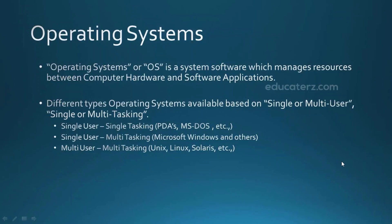So how would your operating system know to run all these things in parallel? How would your hardware know to perform these specific operations? It is the operating system which acts as an interface between your computer hardware and the resources, or we can say, the computer applications. The operating system manages the hardware resources with the computer applications and bridges the gap between your computer application and the hardware.